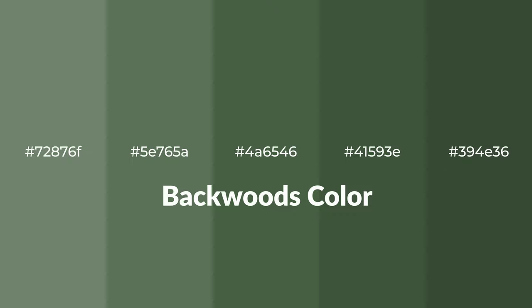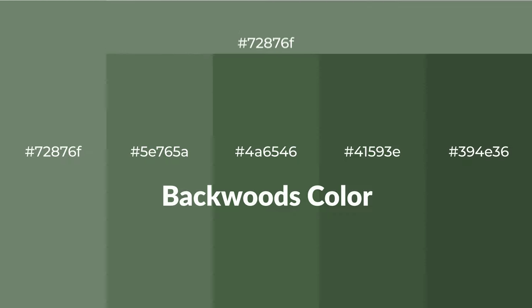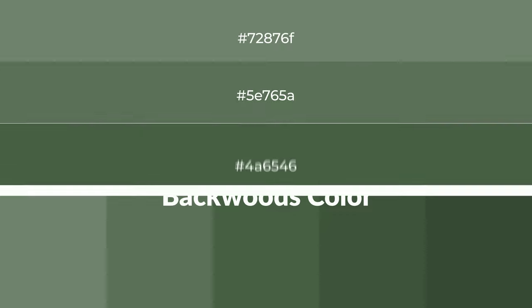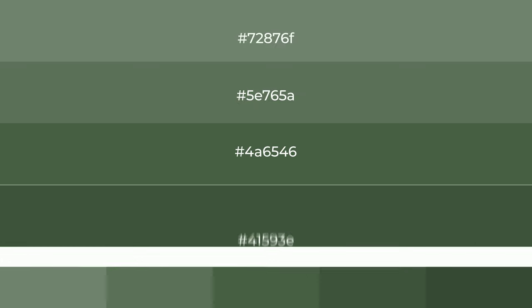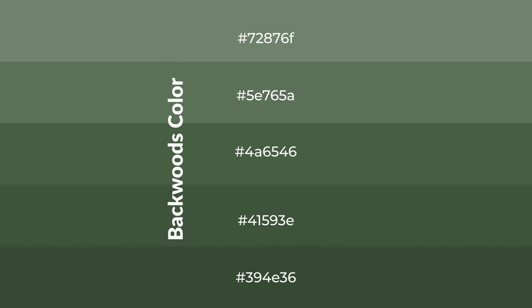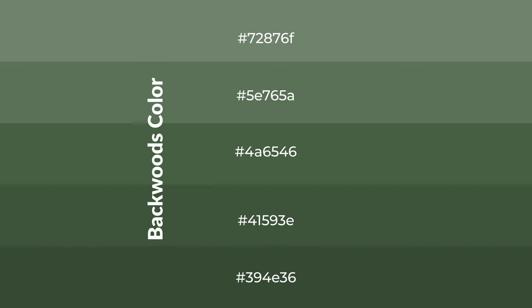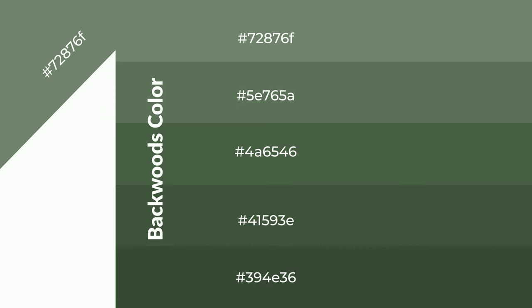Cool shades of backwoods color with green hue for your next project. To generate tints of a color, we add white to the color. Tints create light and exquisite emotions. To generate shades of a color, we add black to the color, and it is used in patterns, 3D effects, and layers. Shades create depth and drama.